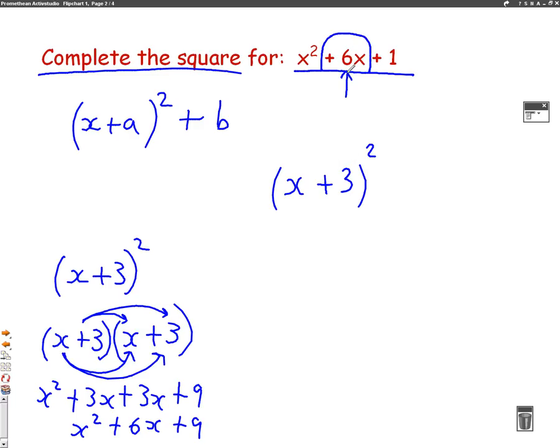The problem is, when you expand it out, you get a plus 9 at the end. So this number here, the 3, when you square that number, you get a 9, and you don't want that. So we're going to get rid of the 9 by putting a takeaway 9. What do we want at the end of our equation? We want a plus 1. So we're going to put a plus 1 at the end as well.